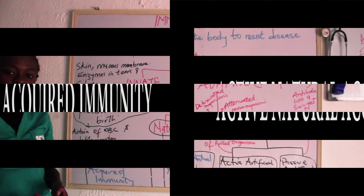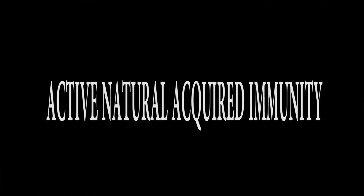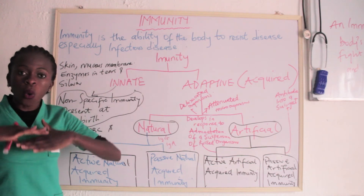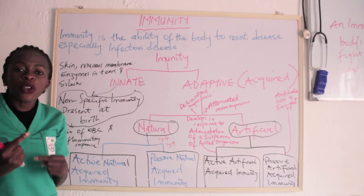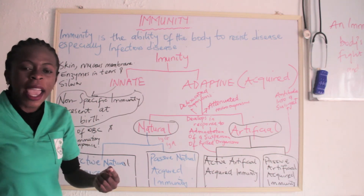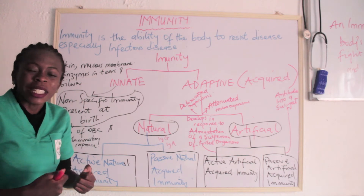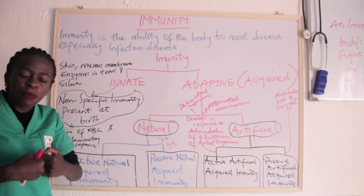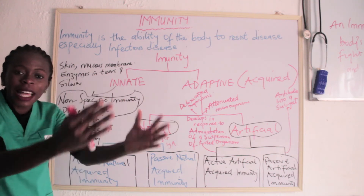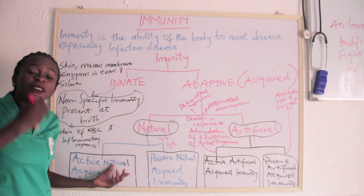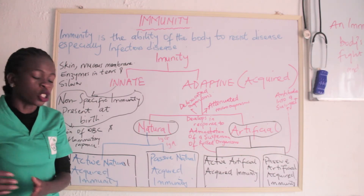Let's begin with natural acquired immunity. In terms of active natural acquired immunity, this is the one an individual's body builds on its own, either by exposure to a disease. For example, once you have chickenpox, you won't be able to get it again. Once you have measles, you won't get it again. Why? Because the body has built antibodies against those diseases. It is your body that builds these antibodies after exposure to the disease or infection — that's why it's called active natural acquired immunity.